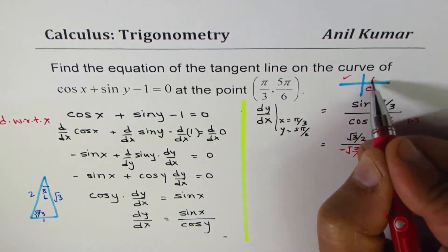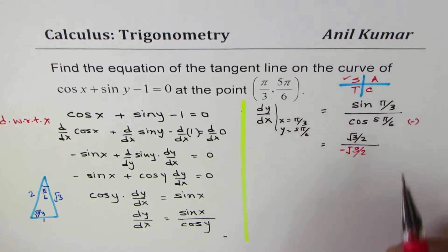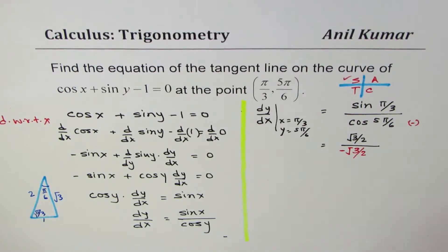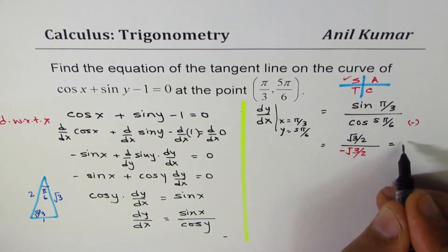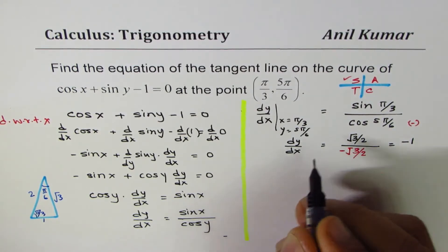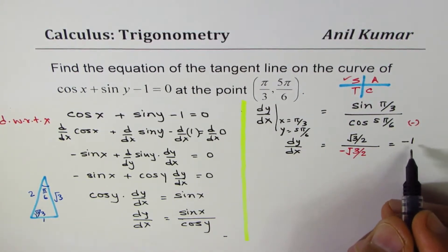Now, using the CAST rule, sin(π/3) is in quadrant 1, it is positive. So what you get here is minus 1. So the derivative, dy/dx, at the given point is minus 1.